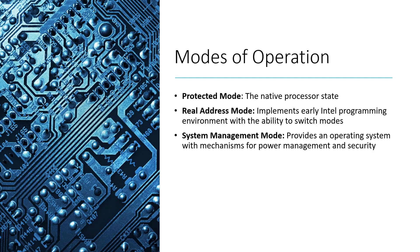System management mode provides an operating system for mechanisms such as power management and security. The main use of system management mode is if we're designing a system very specific to a chip — we might use it to provide that operating system through the processor, allowing us to build something more specific to the processor rather than more generic to many different processors. Protected mode is the main one to keep in mind for these videos, and if we introduce the other modes as we use them, I'll remind you of them again.